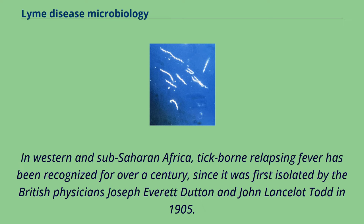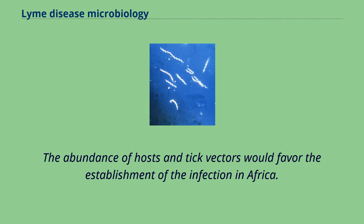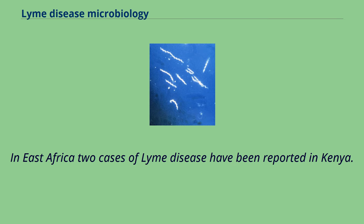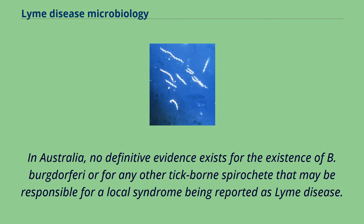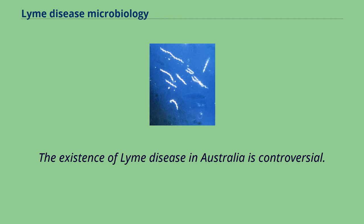In western and sub-Saharan Africa, tick-borne relapsing fever has been recognized for over a century, since it was first isolated by the British physicians Joseph Everett Dutton and John Lancelot Todd in 1905. Borrelia and the manifestation of Lyme disease in this region is presently unknown, but evidence indicates the disease may occur in humans in sub-Saharan Africa. The abundance of hosts and tick vectors would favor the establishment of the infection in Africa. In East Africa, two cases of Lyme disease have been reported in Kenya. In Australia, no definitive evidence exists for the existence of B. burgdorferi or for any other tick-borne spirochete that may be responsible for a local syndrome being reported as Lyme disease. Cases of neuroborreliosis have been documented in Australia, but are often ascribed to travel to other continents. The existence of Lyme disease in Australia is controversial.